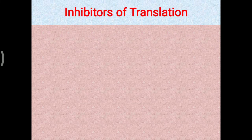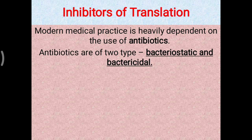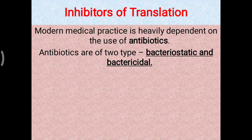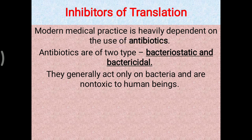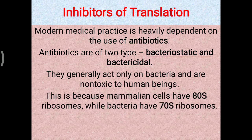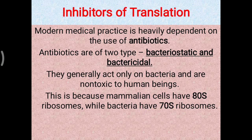Today's topic is about inhibitors of translation. Translation means protein formation, and protein is the most important molecule for the growth and maintenance of any cell, either eukaryotic or prokaryotic. Modern medical practice is heavily dependent on the use of antibiotics, which are of two types: bacteriostatic and bactericidal. They generally act only on bacteria and are non-toxic to human beings because mammalian cells have 80S ribosomes while bacteria have 70S ribosomes, so mostly these antibiotics target the 70S ribosome.